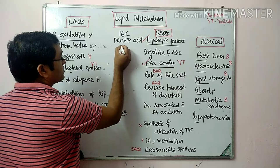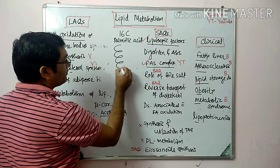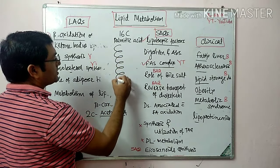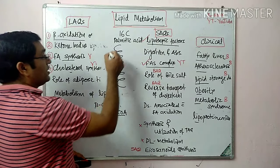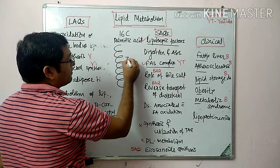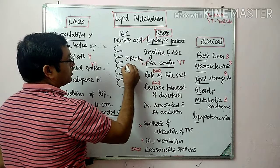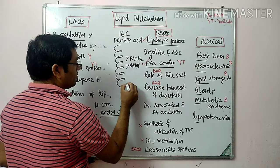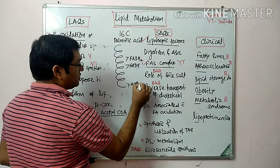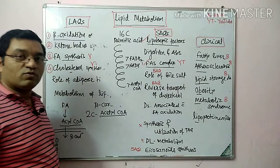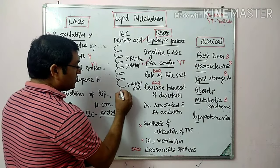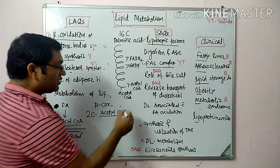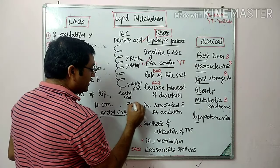Palmitic acid undergoes 7 cycles of beta oxidation. In these 7 cycles, there is generation of 7 FADH2, 7 NADH, and 7 acetyl coenzyme A by sequential removal of 2 carbon fragments. The last remaining fragment is also acetyl coenzyme A, giving a total of 8 acetyl coenzyme A, which undergo the TCA cycle.